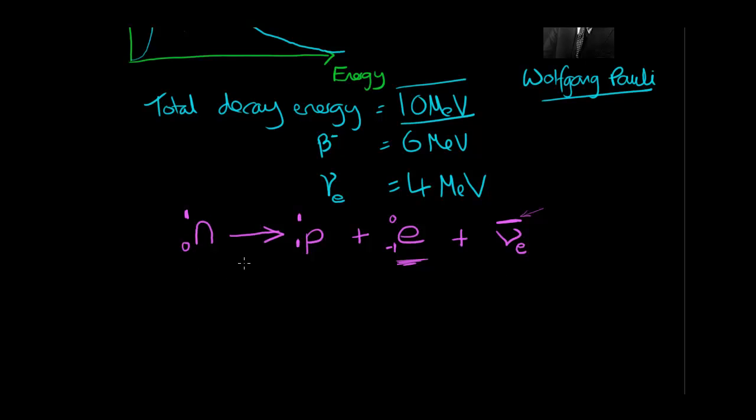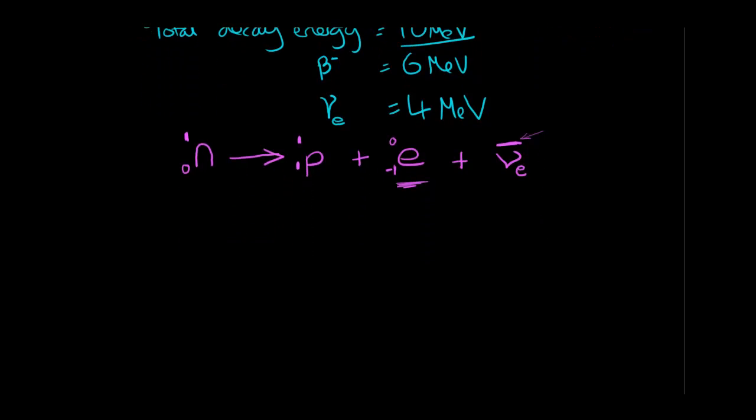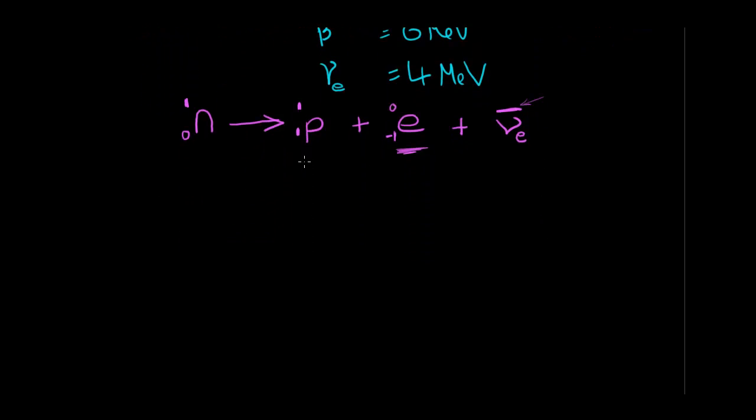Now, there is another equation, there is another decay which is worth noting. So this is beta negative decay, but there is actually one which is the opposite of this. It's called beta positive decay or positron emission.